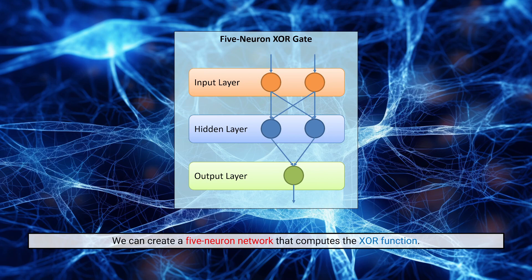As an example, I want to explore a problem we saw in the last video: the XOR function. The logical function for computing XOR is not a function that can be computed by a single neuron by itself. So we might ask — can we compute it with a network? In fact, there are multiple different networks that might compute the XOR function.